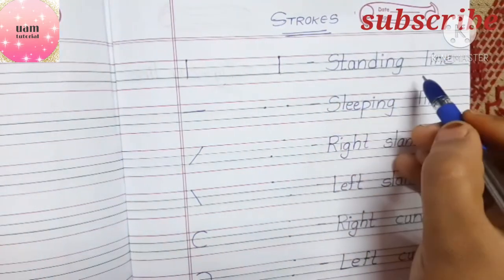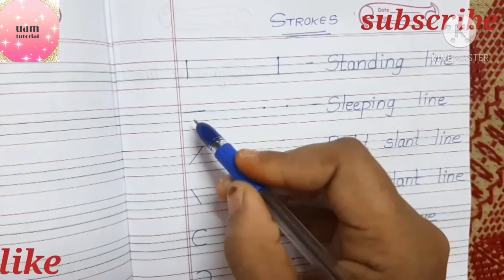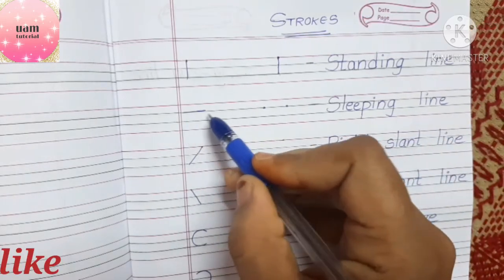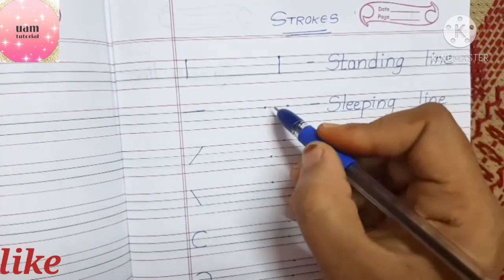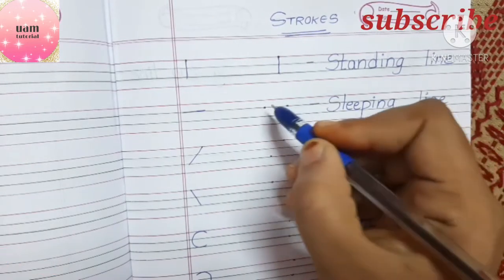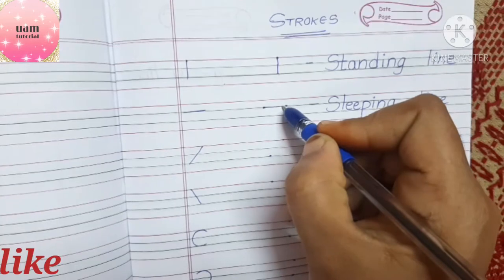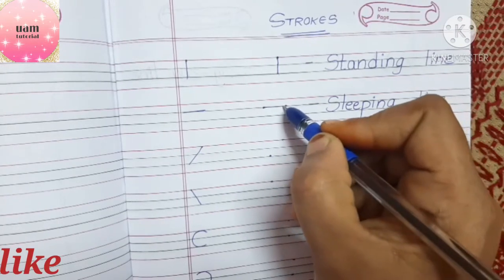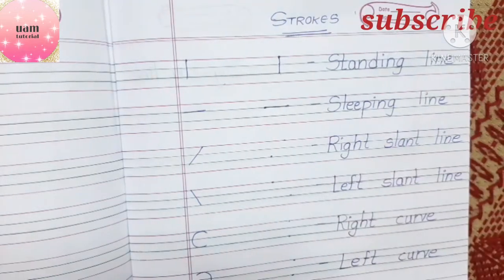The next stroke is a sleeping line. I'll be starting from the first dot to the dot on my right side. This is the sleeping line.